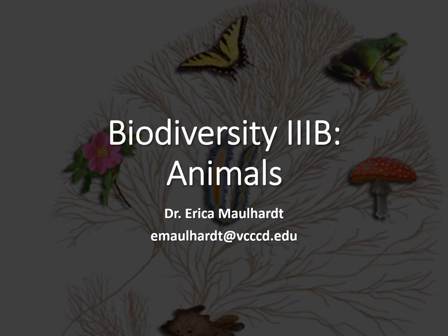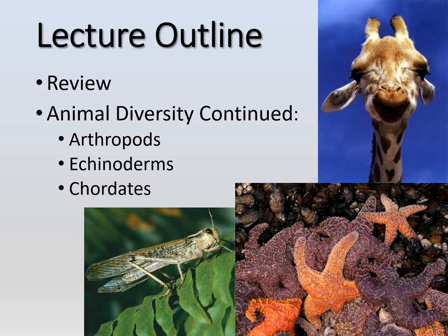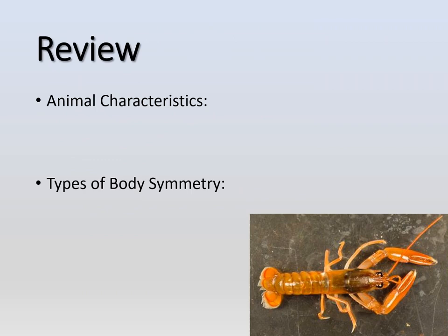Welcome to biodiversity, our third lecture. We're going to do the second half of the third lecture today, finishing off our animals. First we'll do a little review about what characteristics all animals share and body symmetry, and then we'll continue our animal diversity with arthropods, echinoderms, and chordates.